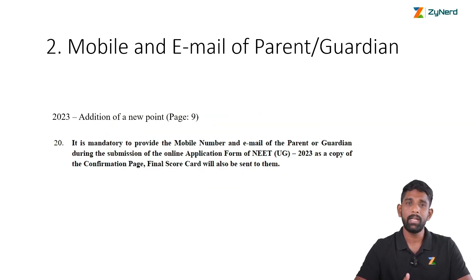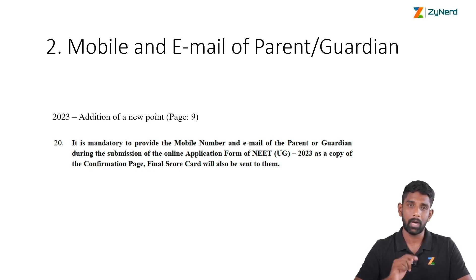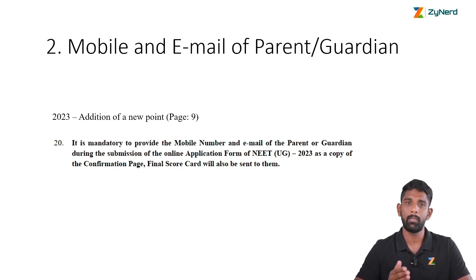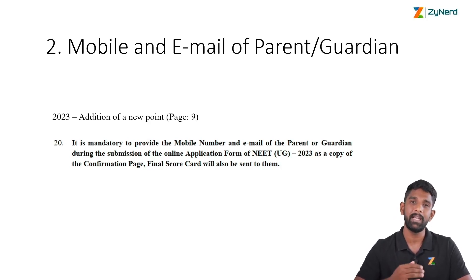Next is the mobile number and email of the parent or guardian. Last year this option wasn't there. So this year there is an option to provide the parent or guardian's mobile number and email ID. This is mandatory because a copy of the confirmation page and the final scorecard will be sent to this number and email ID.